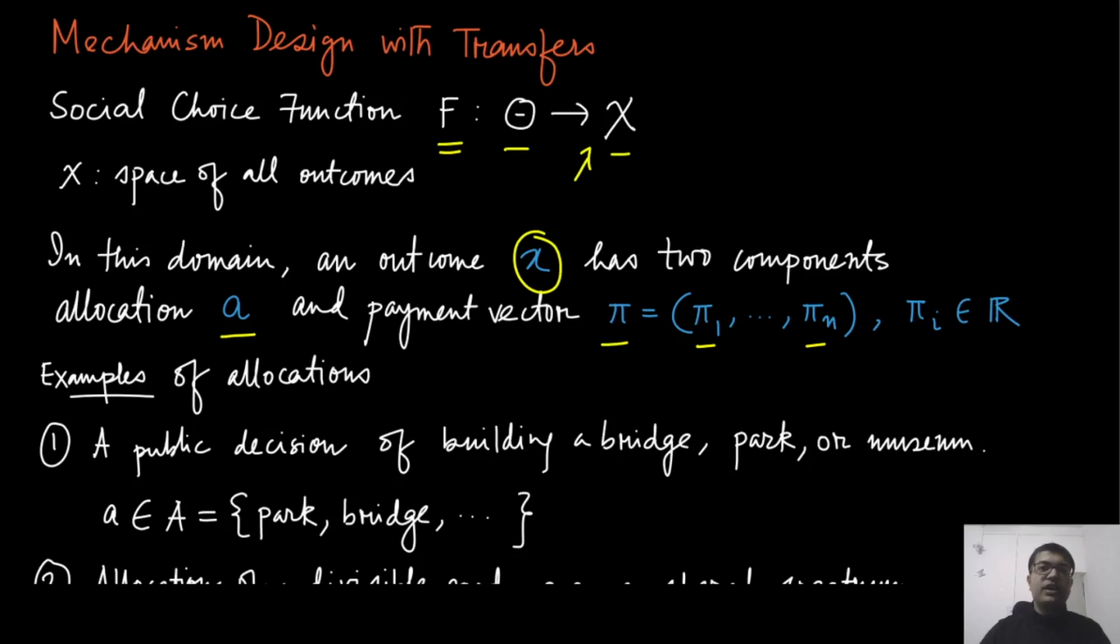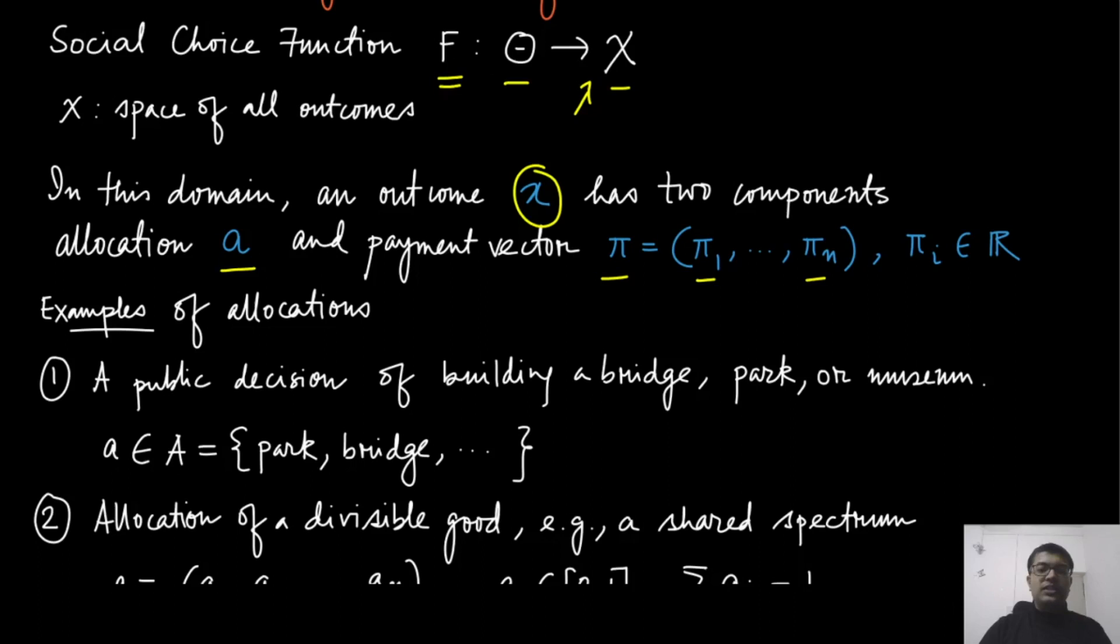Before that we will have to define a few other things. What are the typical examples of allocation? Let's say the city planner is trying to take a public decision of building a bridge or park or museum. The allocation space in this case will be a collection of all such alternatives.